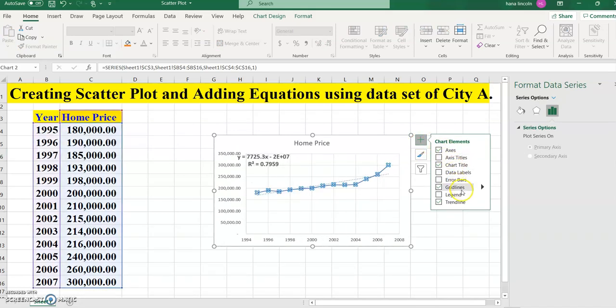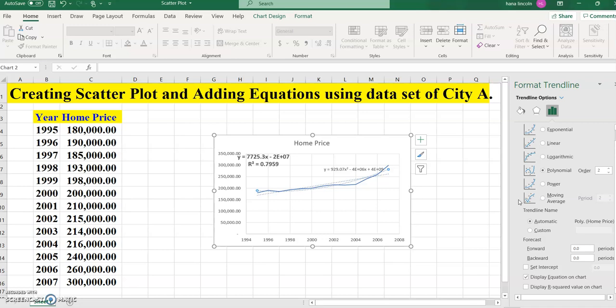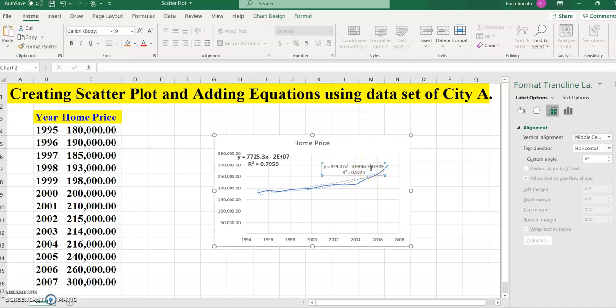Now next we're going to create a quadratic equation. You're going to choose polynomial. Click on the polynomial which is the second degree. The same way you're going to click the last option. We don't need set intercept. We need to check display equation and display r square value on the chart. Now as you see here on the graph we have quadratic equation. Let's highlight it and increase the size.